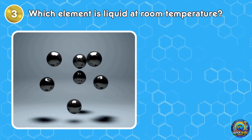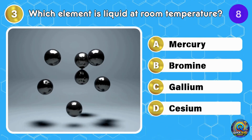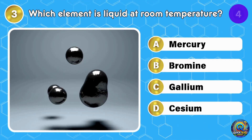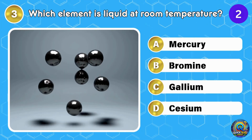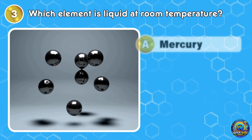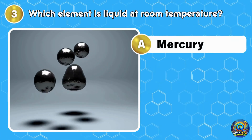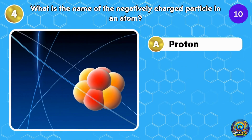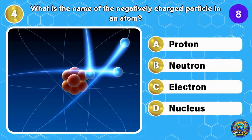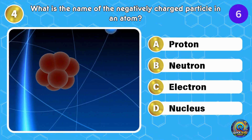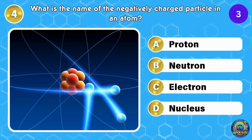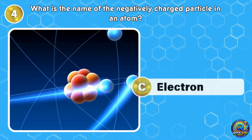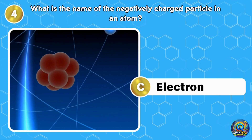Which element is liquid at room temperature? The answer is mercury — the only metal that flows like water. Next up: what is the name of the negatively charged particle in an atom? The answer is electron, zipping around the nucleus at lightning speed.